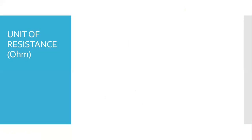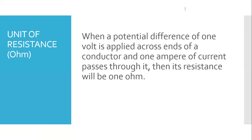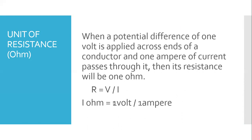Unit of resistance — the Ohm: When a potential difference of 1 volt is applied across the ends of a conductor and 1 ampere of current passes through it, then its resistance is 1 Ohm. So 1 Ohm equals 1 volt upon 1 ampere.